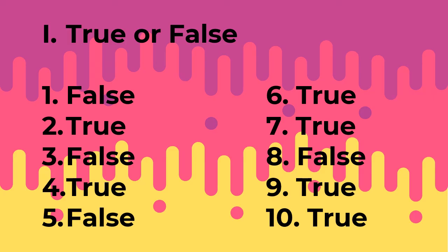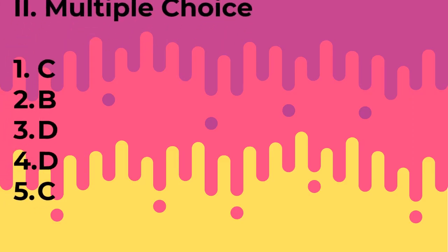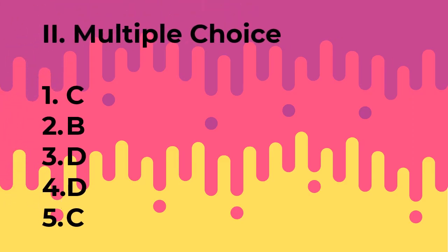How's your score in Test 1? Let's go to Test 2. Here are the answers in Test 2 for multiple choice. Number 1: C. Number 2: B. Number 3: D. Number 4: D. And last but not least, Number 5: C.